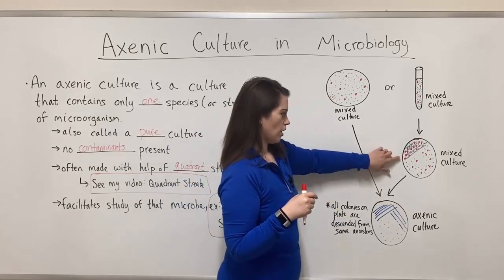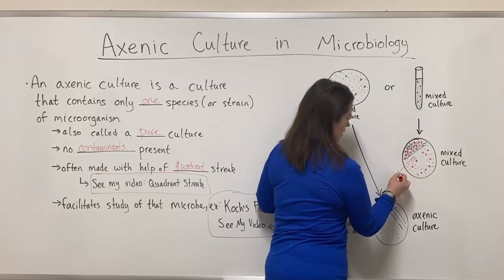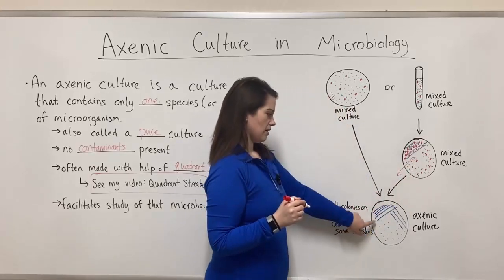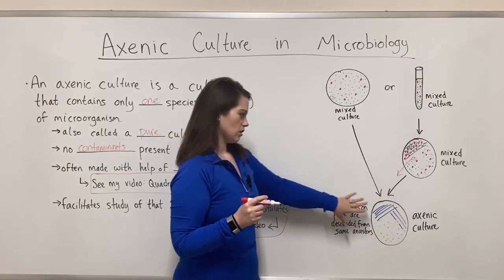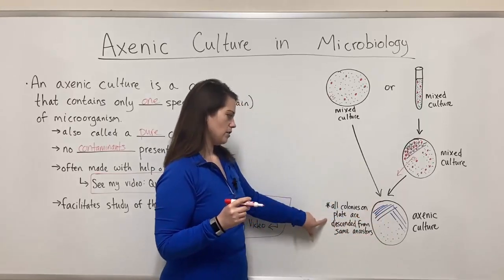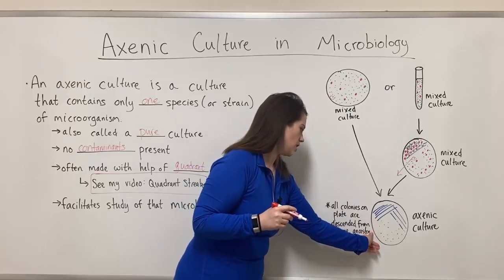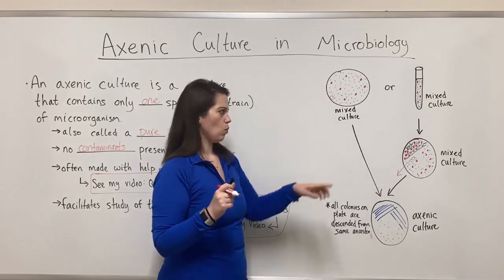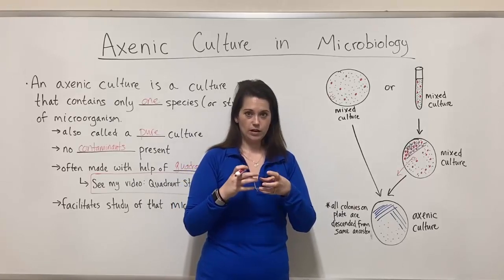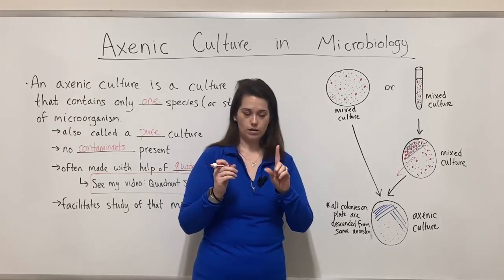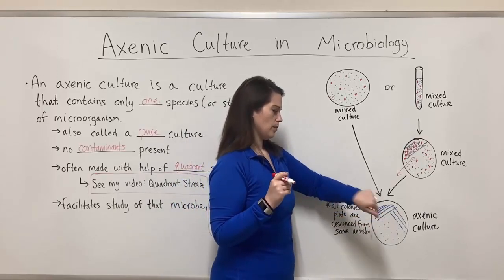And then once you've got it on a plate, it's easy enough to just grab a colony and make the pure culture — the axenic culture — where all the colonies on this plate are descended from the same ancestor. One colony was taken, and that colony itself is made up of bacteria that all descended from one colony-forming unit, and now you've got your axenic or pure culture.